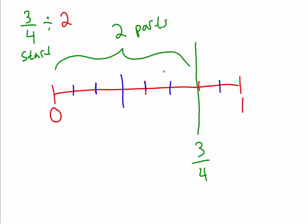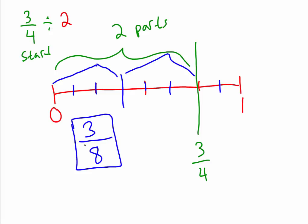When you look at the squiggly bracket, it's covering — count with me — one, two, three, four, five, six sections, split into two parts, making three sections per part. We take this half as one part and the other half as the second part — they are equal. Now we take one portion: one, two, three — we got three out of... not six. You have to go back to the whole: three, four, five, six, seven, eight pieces. The answer is three-eighths.